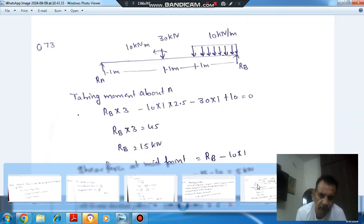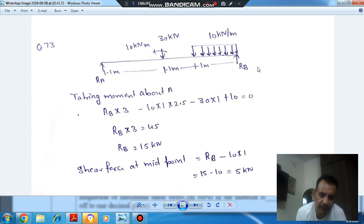So suppose at ends RA and RB are the reactions. Now if we take moment about A, then it will be RB into 3.